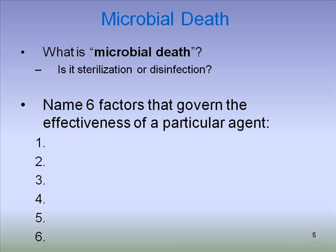First of all, the number of microbes. If you have a lot of microbes to disinfect, it will affect how the agent is able to work. The nature of microbes is the second factor — we just talked about how microbes fit into different resistance categories. A puddle of Pseudomonas is going to be a little bit more hard to kill than a puddle of E. coli.